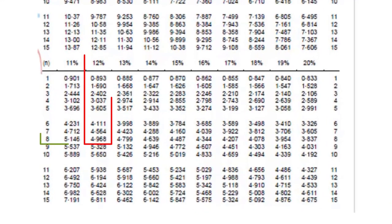If you use 12% at 8 years on the annuity table, it will also give you 4.968.